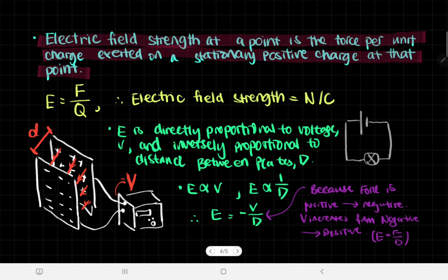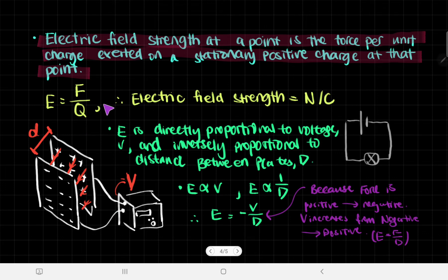Electric field strength is defined as the force per unit charge exerted on a stationary positive charge at that point — the amount of force acting on a charge in that field. Field strength can differ at different points. From the definition, we get the equation: E equals force divided by charge. Electric field strength has units of newtons per coulomb.